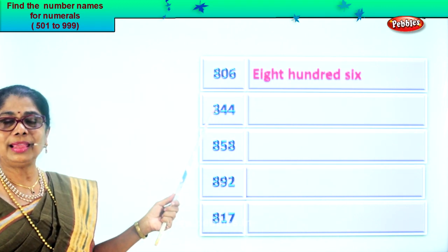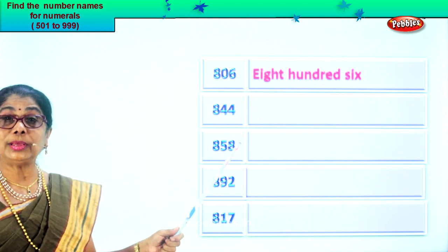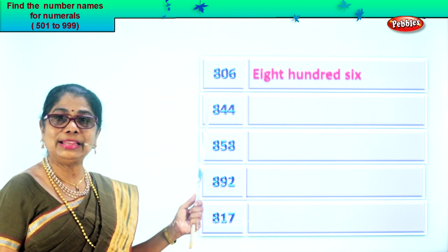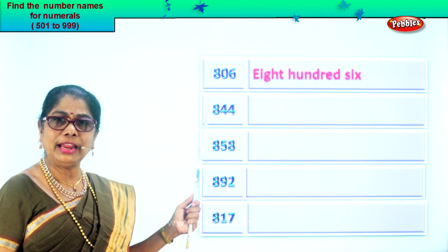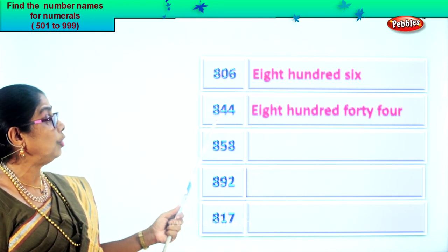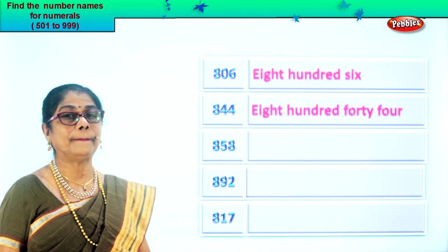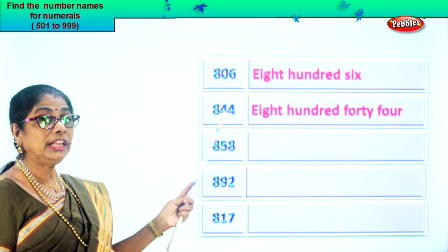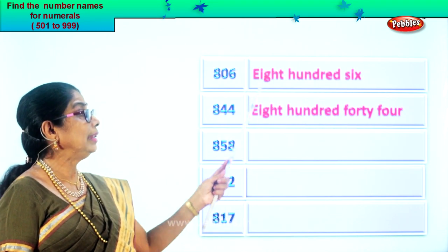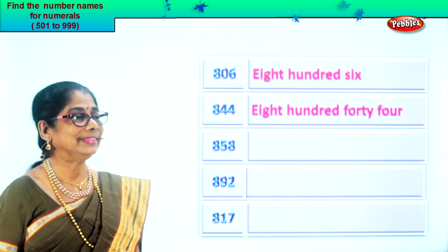We have here eight, four, four. Four in the ones place, four in the tens place and eight in the hundreds place. Let's read the numeral: eight hundred forty-four. First we write eight hundred, then we write forty-four. Did you enjoy? Good.